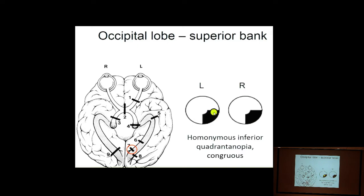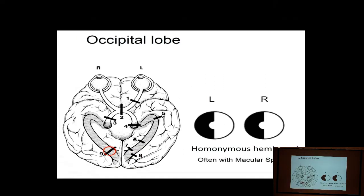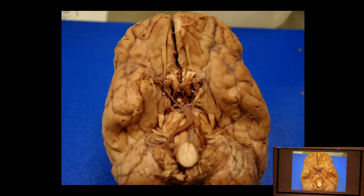Any time you see macular sparing, there has to be a PCA stroke. A superior bank occipital lesion gives inferior quadrant loss with preserved macular fibers. If the entire PCA territory in the occipital lobe is knocked out, we get a contralateral homonymous hemianopsia with preserved macular vision. Macular sparing is specific to PCA stroke — it's the only thing that does that.